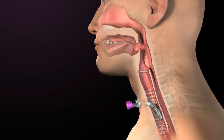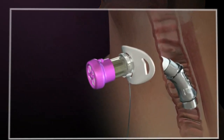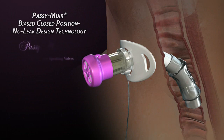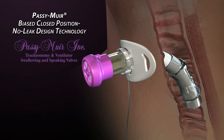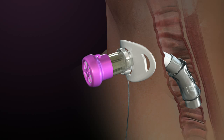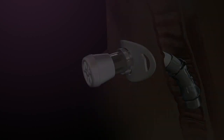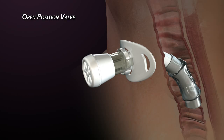The Passy Muir tracheostomy and ventilator swallowing and speaking valves incorporate a unique patented design feature that translates into significant benefits which are exclusive to the biased, closed position, no-leak design. To understand the principle behind the Passy Muir patented feature, it is important to first understand how an open position valve operates.